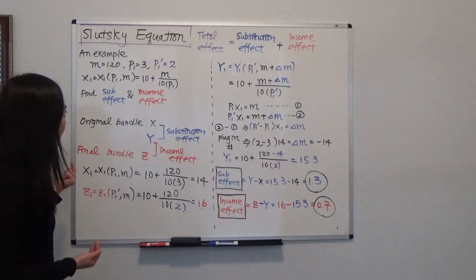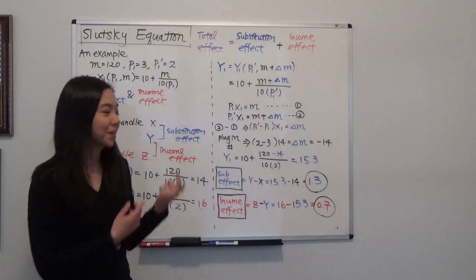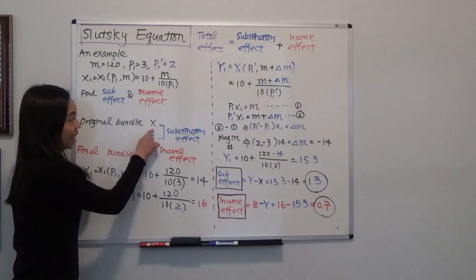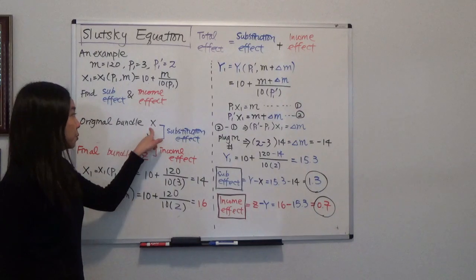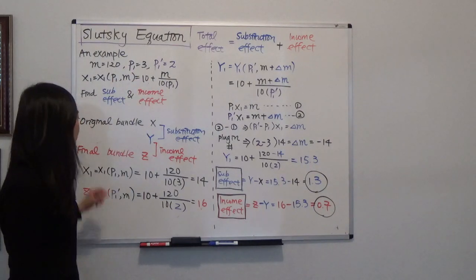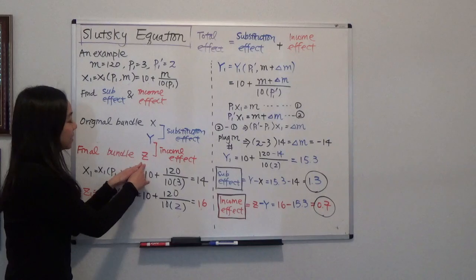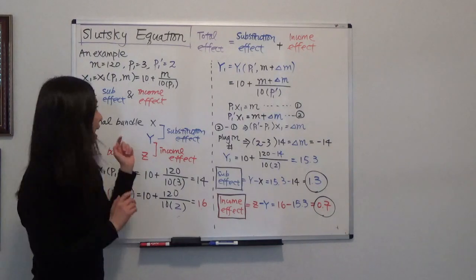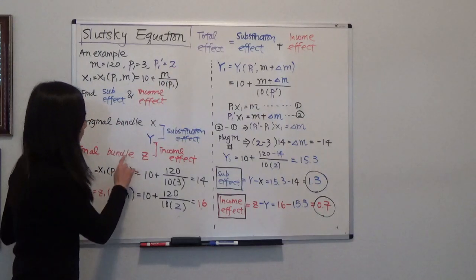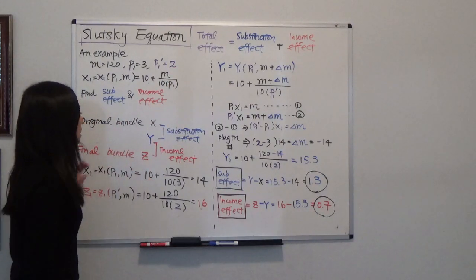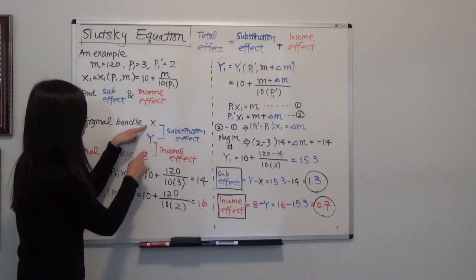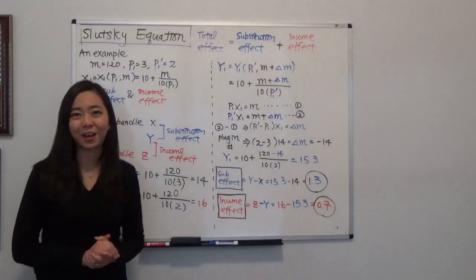If you remember from the previous video, given that the original bundle is X — our original bundle was when the price was $3 — and our final bundle is Z, which is the bundle we consume after the price has changed to $2, then the difference between X and Z will be our total effect.